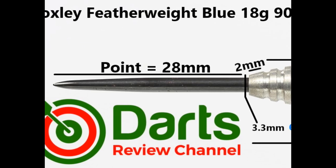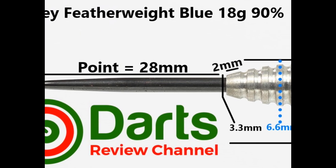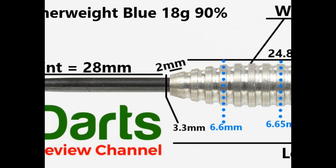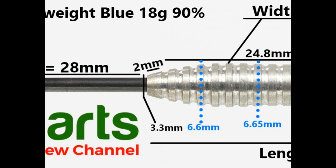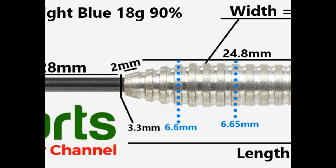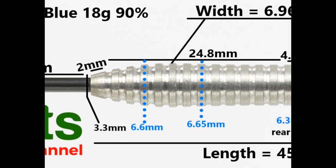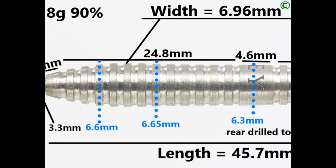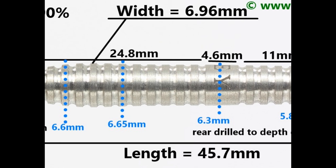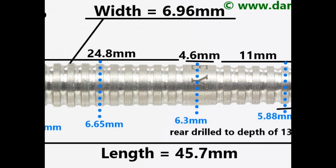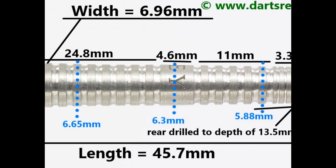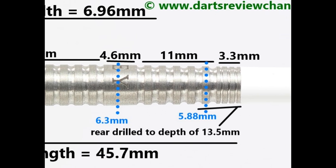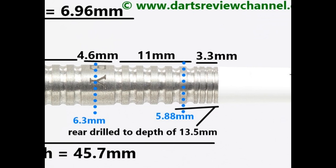The darts are fitted with a black coated 28mm point. There's a smooth tapered section at the front 2mm, and then you've got this thin ring grip that's 24.8mm. Then you've got a smooth band with the Loxley logo that's 4.6mm. Then you've got more of the thin ring grip that's 11mm, and then on the end a very fine ring grip of 3.3mm. Length 45.7mm, widest 6.96mm.